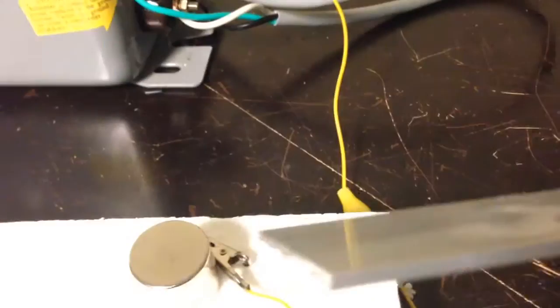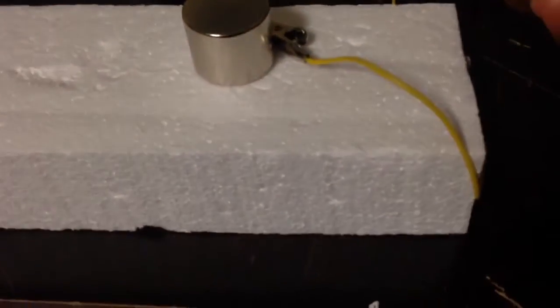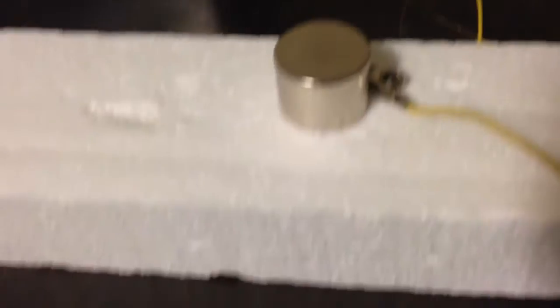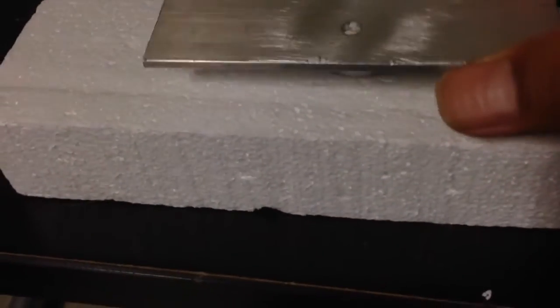So here I have a little strip of aluminum. I'm going to balance the strip on top of this neodymium magnet. We'll put it right there.